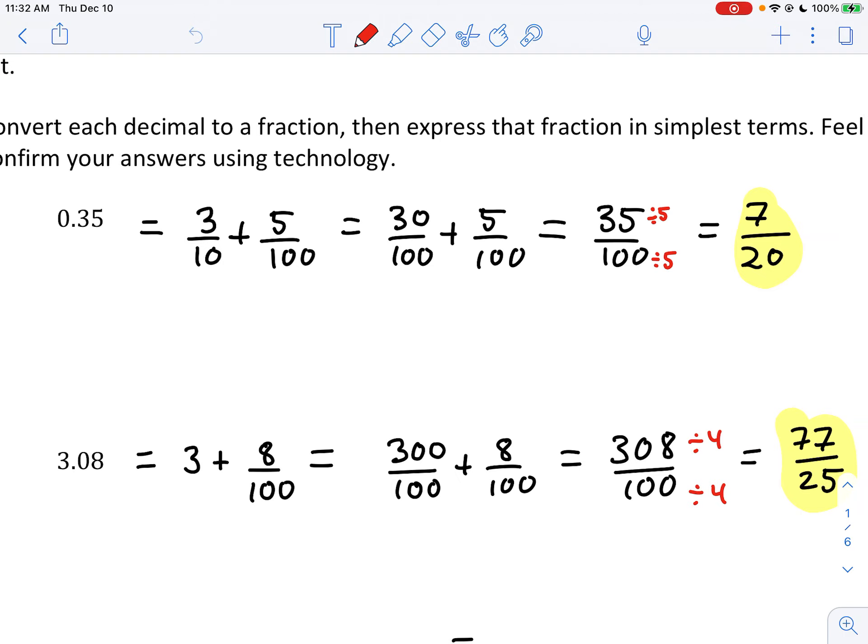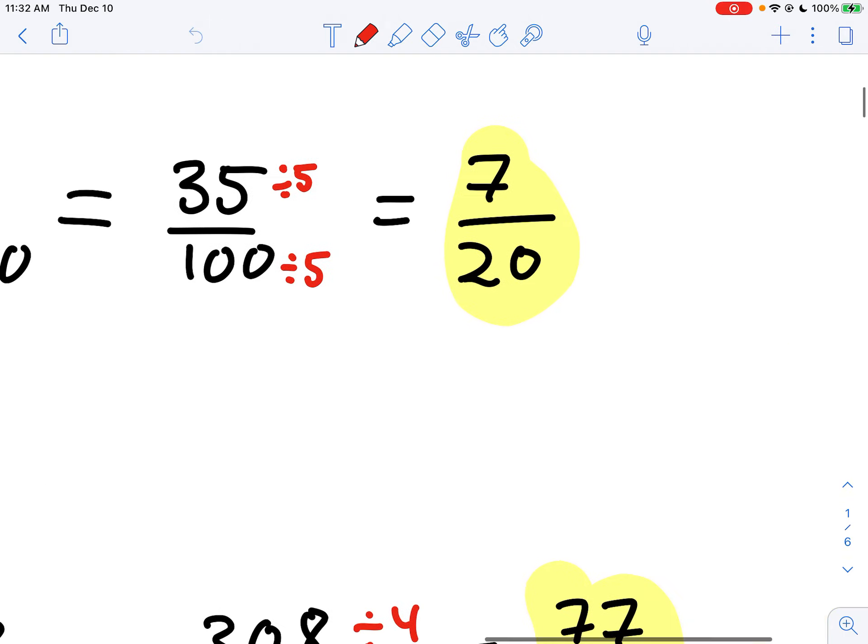And then one comment I want to make still, some people are still just writing a division by 5 once in order to reduce this to more simple terms. This is not good notation. What we're trying to do is trying to find a way to rewrite this fraction in a way that's the same value but more simple terms.